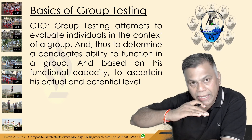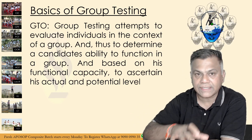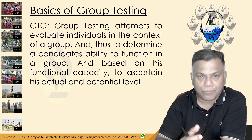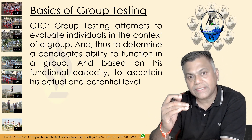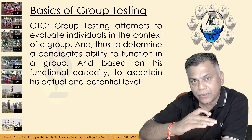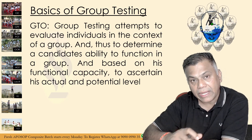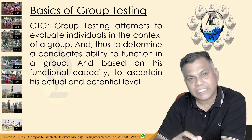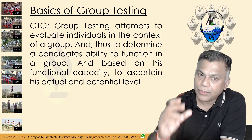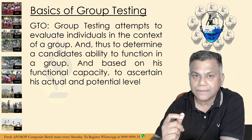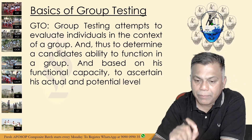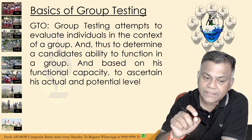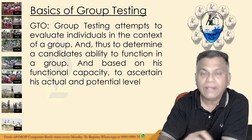Based on your functional capacity, the GTO finds out two levels: your actual or present level of performance today in the SSB, and based on that he predicts your potential level — whether you will be able to reach the average officer requirement after training. If you can raise your present level closer to the expectation, your probability of getting recommended will be high because the gap to be filled after training starts reducing. Increase your functional capacity so he can ascertain your actual and potential levels.